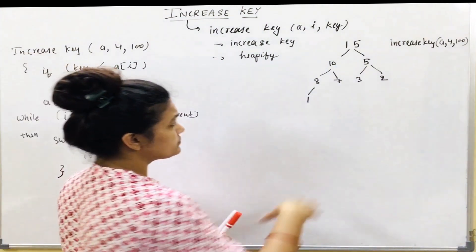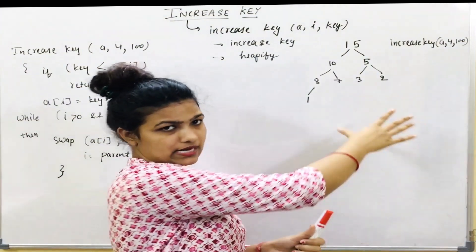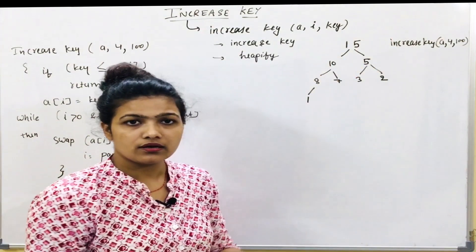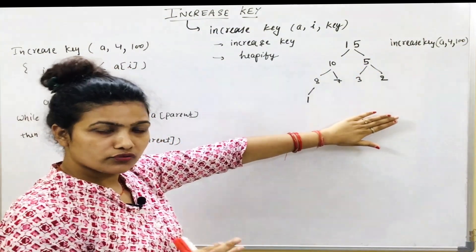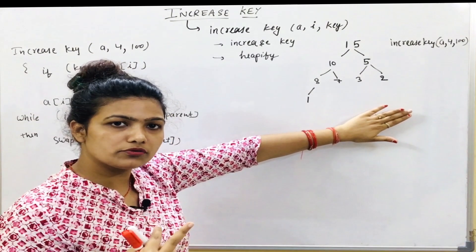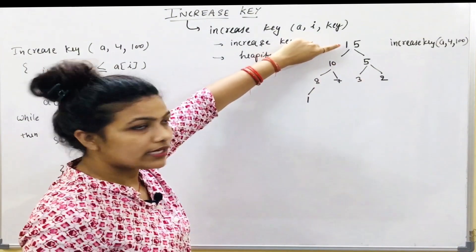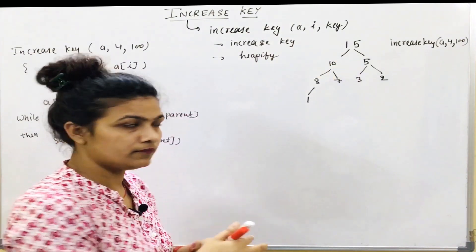Suppose we have an example — this is a heap. We can verify this is a heap because a heap is an almost complete binary tree, filled level by level.